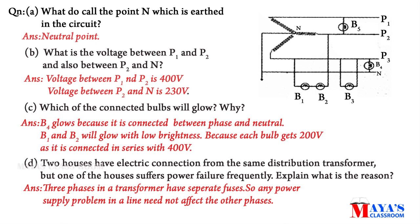Let us look at B1 and B2. B1 and B2 are connected in series in the power line. Since the voltage between two phases is 400V and the two bulbs are connected in series, each bulb gets 200V. So both B1 and B2 will glow with low brightness.